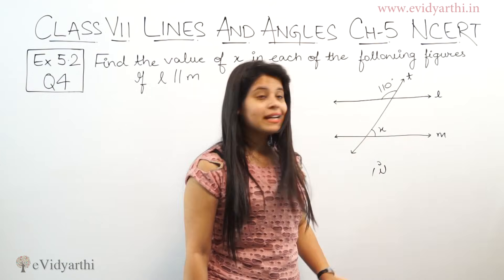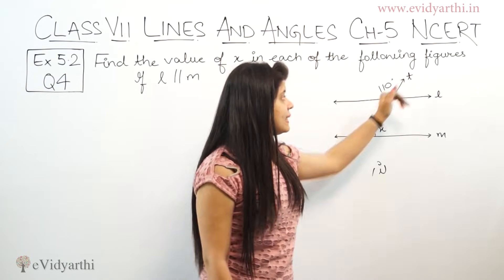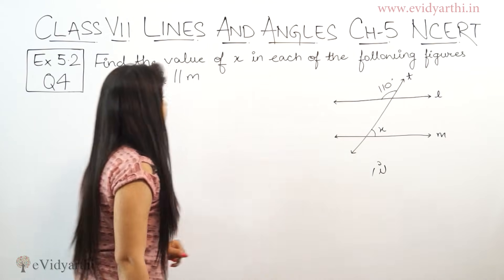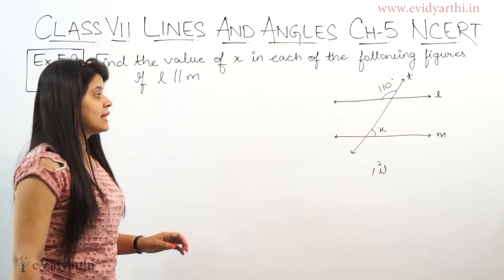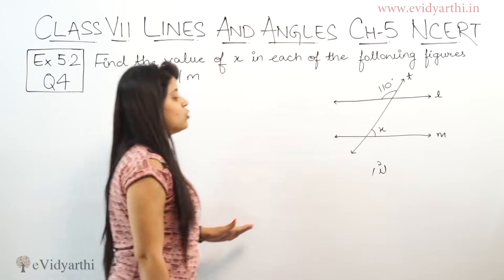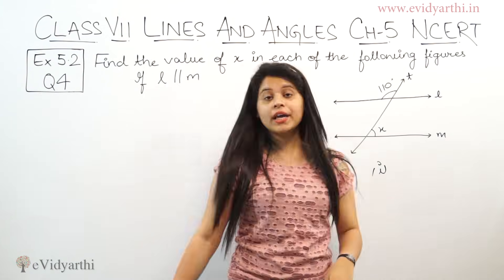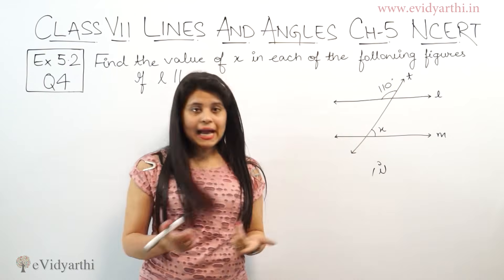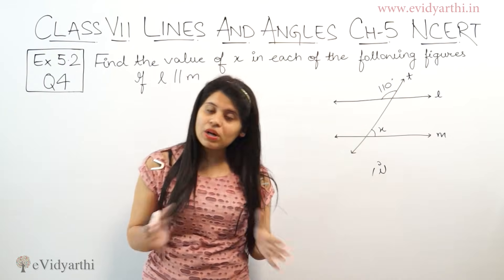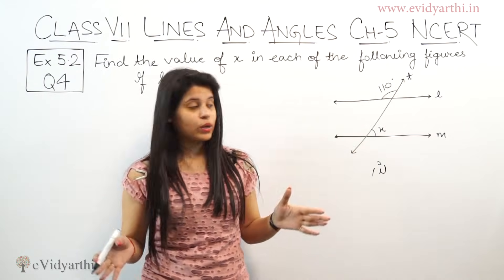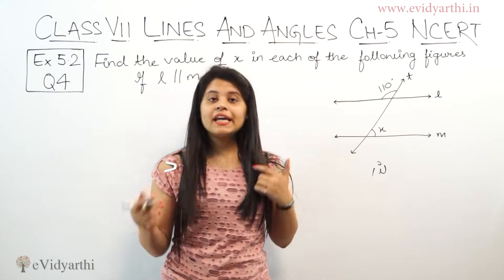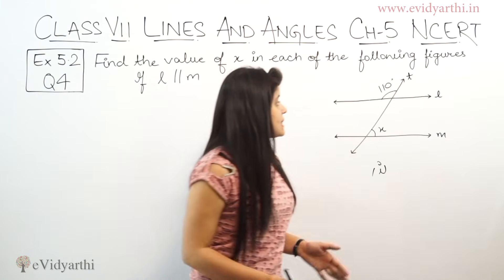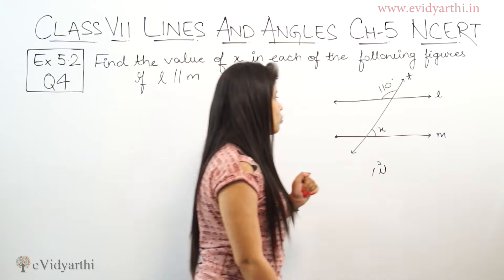So if l and m are parallel, what is t? Transversal. Now we find x here. First of all, if you have such figures, if you find one angle, you will find many ways. Not that the way I will do — it will be just one way.